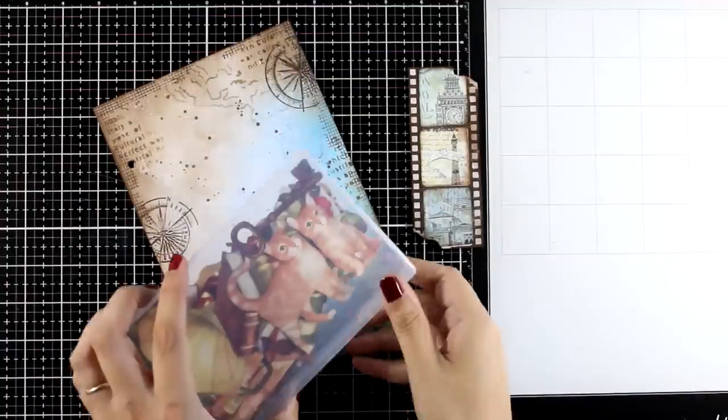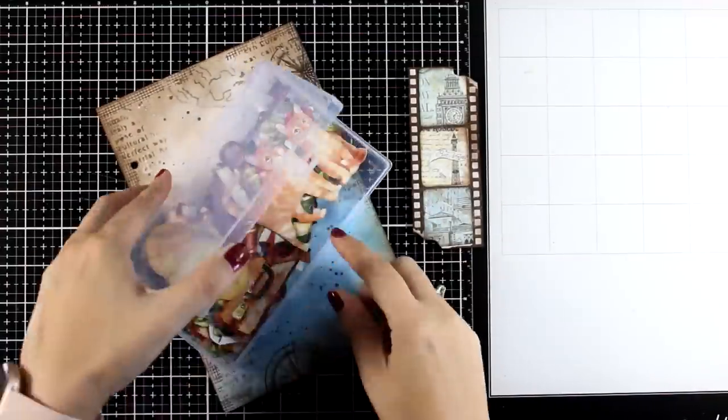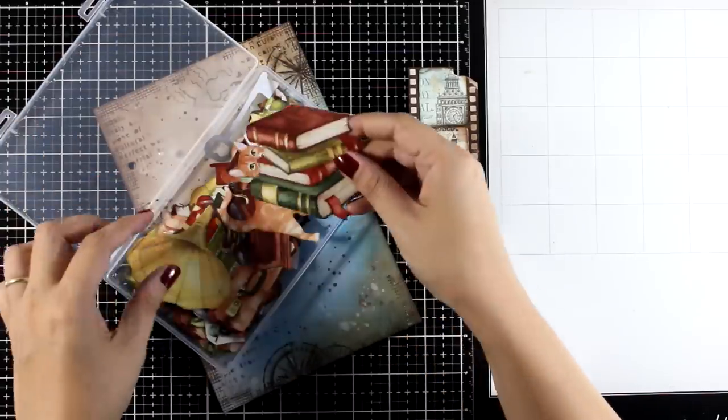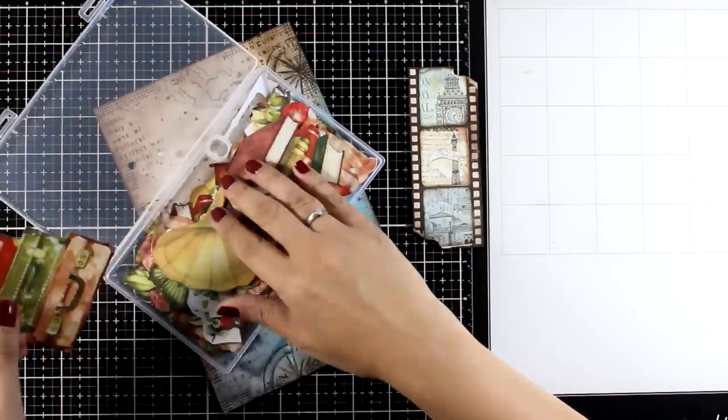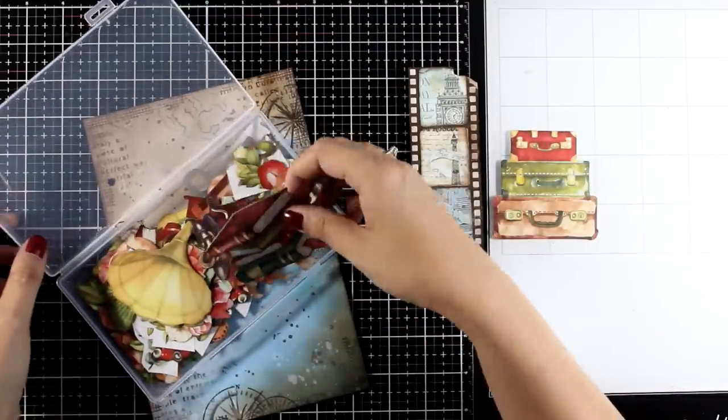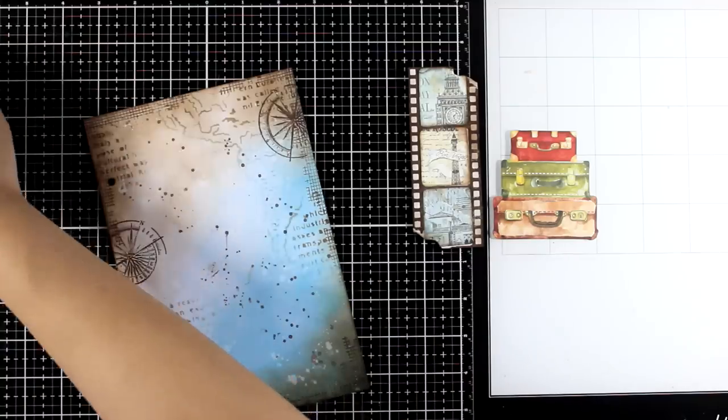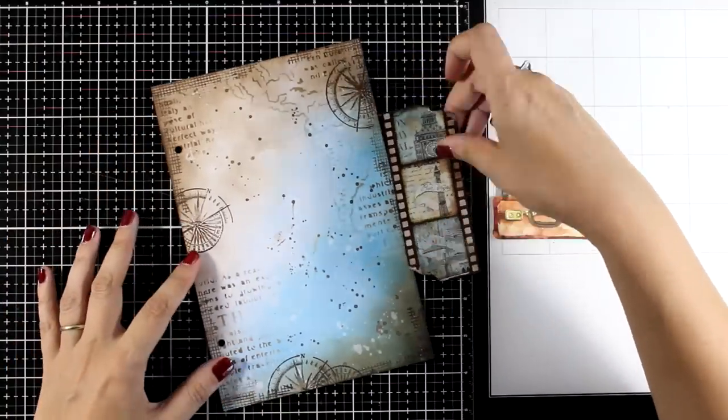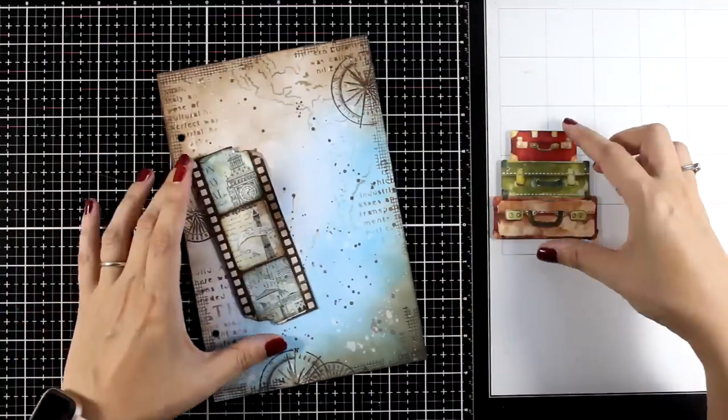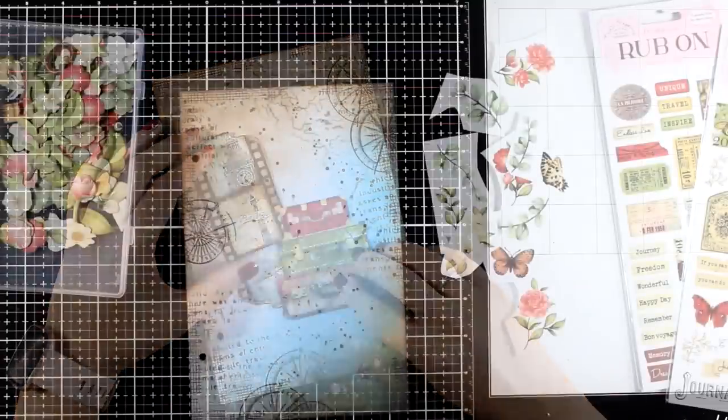Now let's bring in the ephemera pack from my second collection Create Happiness with Stamperia. You will find lots of images here. I did use a typewriter on the previous week. I'm going to go with the suitcases this time since I'm going for a travel themed project.